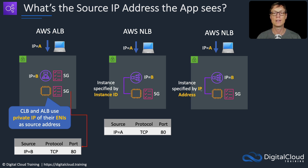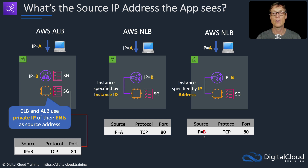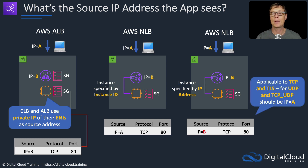In another scenario, if you add the instance to the target group by IP address rather than instance ID, the source IP address seen is the IP address of the load balancer nodes. This comes up in exam questions testing your understanding of which IP address the application sees or which IP to use in the security group. Note this applies to TCP and TLS; for UDP and TCP/UDP the IP address would be the client IP, not the NLB node IP.